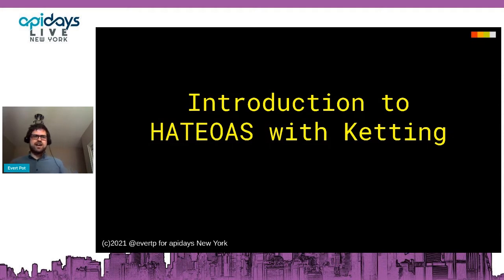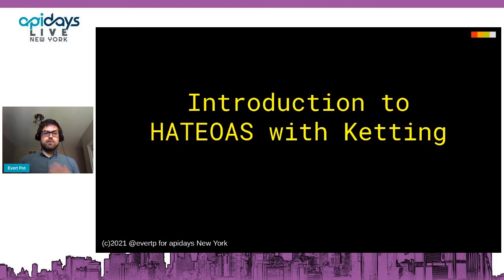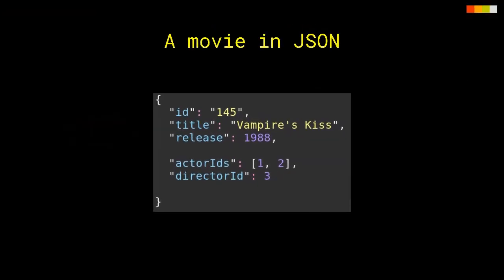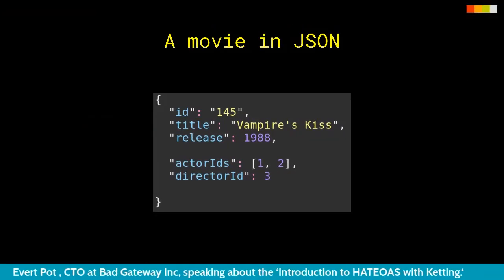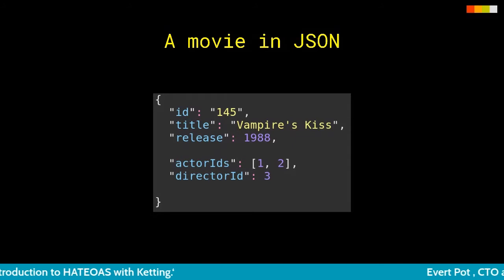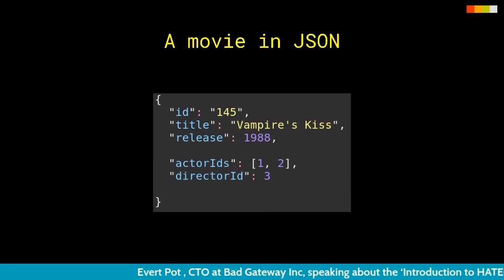A quick history for Ketting: around 2016, I joined a new startup in Toronto and was hired to lead the team and design the API for a new product. We knew we wanted to do REST and JSON, but one of the earliest design decisions was what format to use. We thought that if we use an existing format, questions might be answered either by tooling or by knowledge from a community.